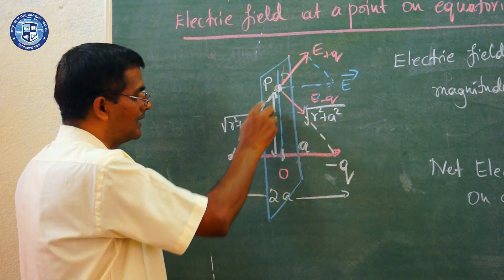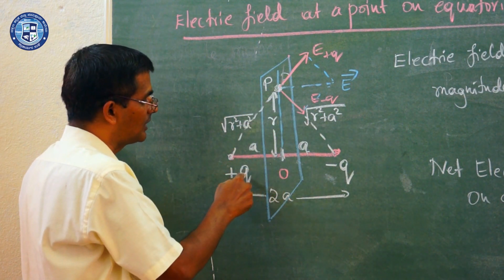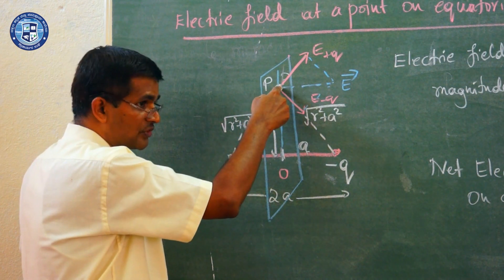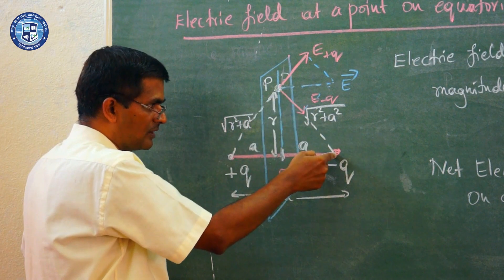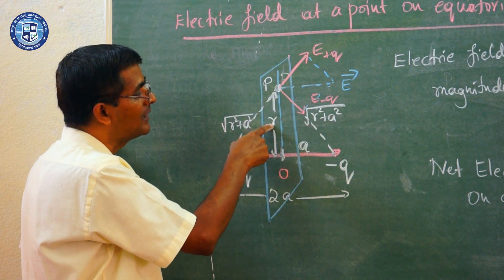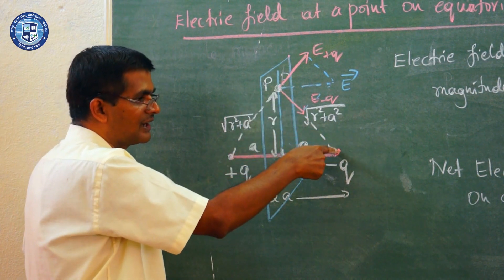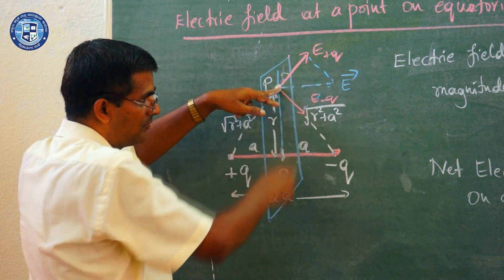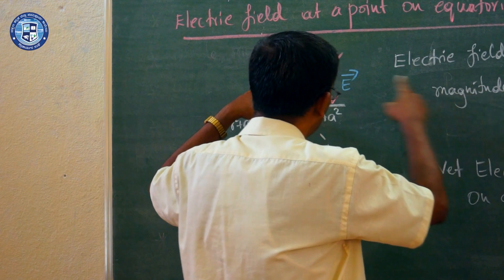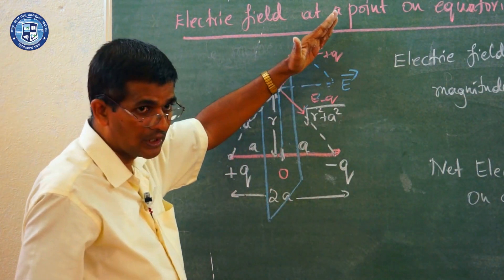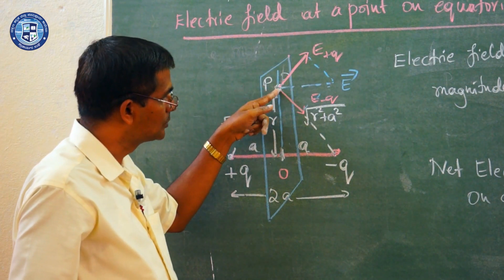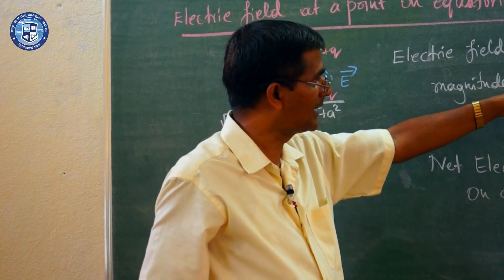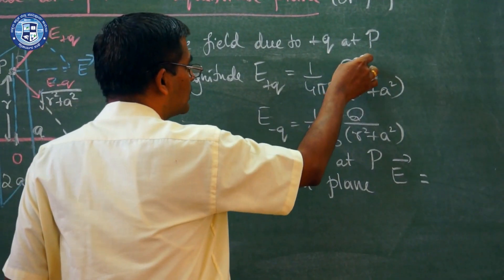Using the right-angle triangle and the Pythagorean theorem, the distance from point P to +q is the square root of r² + a². Similarly, the distance from -q to P also forms a right-angle triangle with sides r and a, giving the same distance: square root of r² + a². The electric field at point P due to +q has a magnitude directed away from +q, and due to -q, the test charge experiences an attractive force directed towards it.